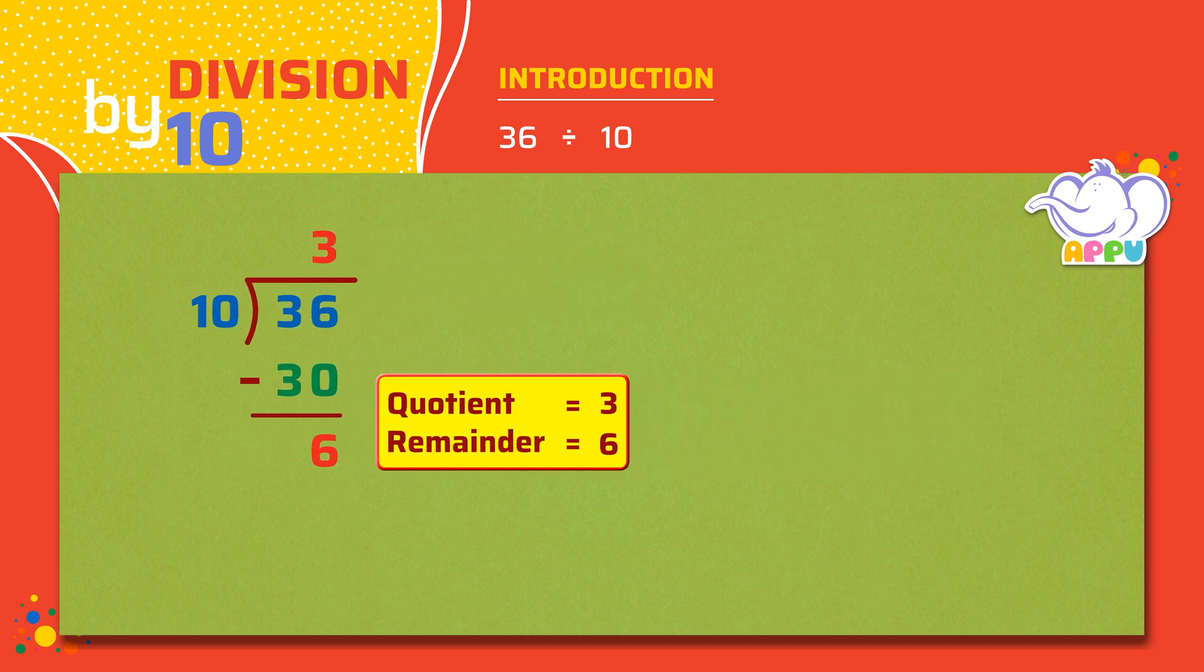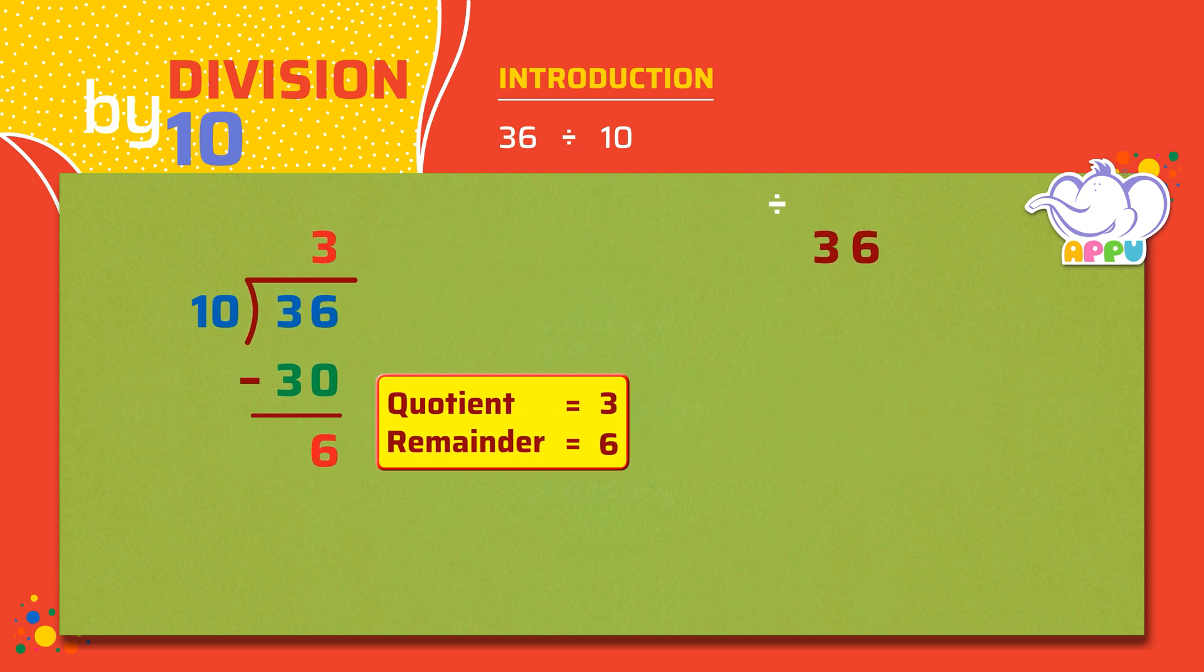Let's see an easier way to divide 36 by 10. The quotient is the digits other than the ones place. That is 3. And the remainder is the number in the ones place. That is 6.